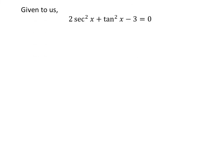Given to us: 2 times square of secant of x plus square of tangent of x minus 3 is equal to 0. We know the trigonometry identity square of tangent of x plus 1 is equal to square of secant of x.